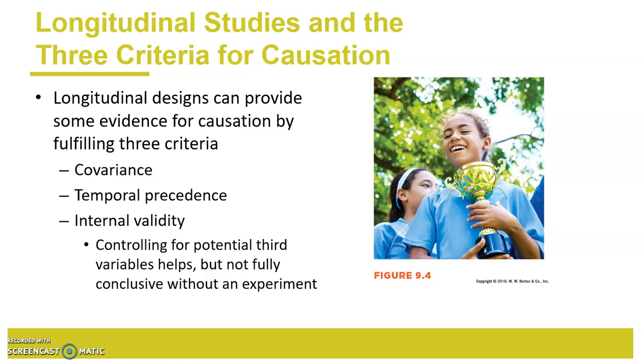So longitudinal designs, you've got the covariance, that's just the correlation. Temporal precedence, you can get that from the cross-lag correlations. Internal validity, to do that you really need to measure other variables and adjust for them, which we'll talk about in the second part of this lecture.